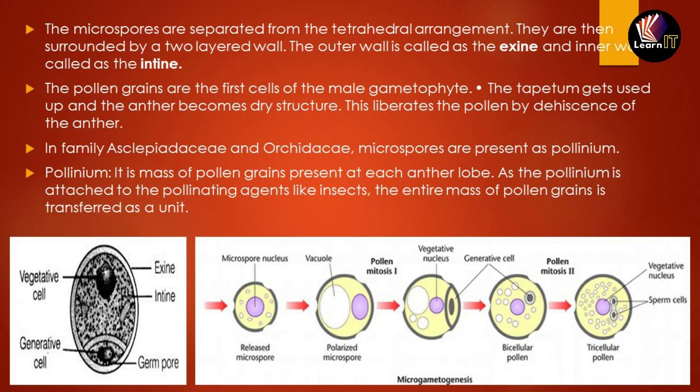In the families Asclepiadaceae and Orchidaceae, microspores are present in the form of pollinium. Polliniums are masses of pollen grains present in each anther lobe. When the pollinium is attached to a pollinating agent like an insect, the entire mass of pollen grains is transferred as a unit to another plant.